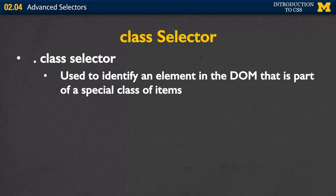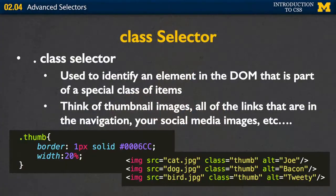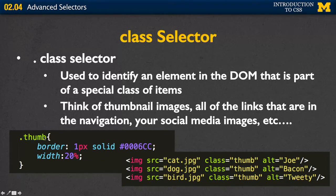Class selectors are similar to IDs, but classes can apply to a range of elements, not just one particular element in the DOM. Think of thumbnail images or social media icons — you want to style a big group of things the same way, but not all of them. You don't want all of your images to be thumbnails, but you want a lot of them to be. In your HTML you'd have class equals thumb on multiple elements. In your CSS, instead of the pound, you use the period or dot along with the class name. The page will know to apply that styling for the thumbnails in addition to any general image styling.